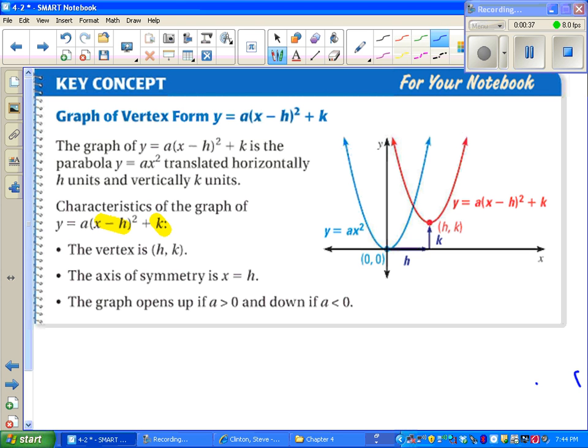The vertex form also gives us the axis of symmetry. It's always at X equals H. So we don't have to use the formula, negative B over 2A this time. And just like standard form, the A tells us whether or not this opens up or down, and it tells us if it's steep or wide.